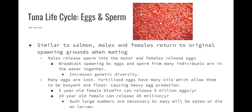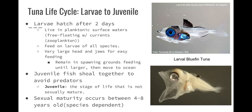Many eggs are lost. Fertilized eggs have many oils in them which allow them to be buoyant and float to the surface — they're going to be preyed on a lot and can't be hidden. Five-year-old female bluefins can release about five million eggs a year; 20-year-old females can release 45 million eggs a year. Such large numbers are necessary because many will be eaten and many will die.